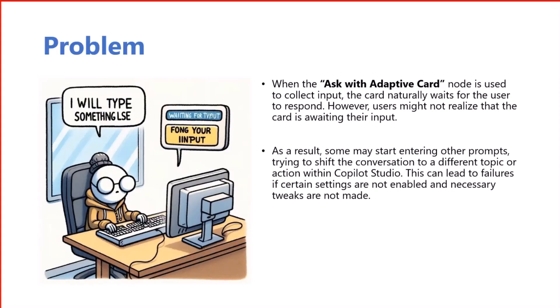Let's see what the actual problem is and why we need to skip these adaptive cards. There is an action in Copilot Studio called 'Ask with Adaptive Card.' This node shows an adaptive card to users whenever a topic requires user inputs. Besides asking with question nodes, we can also ask with adaptive cards. This action lets you design an adaptive card in the adaptive card designer and place it so you can consolidate all input fields into a single card, requiring the user to respond to it.